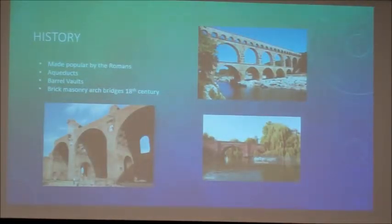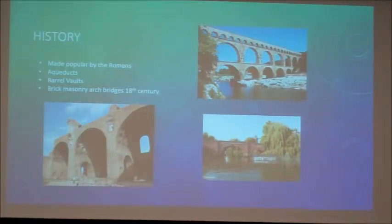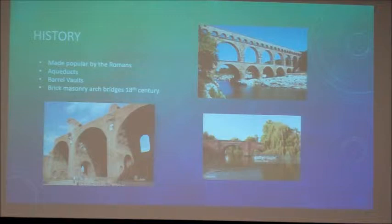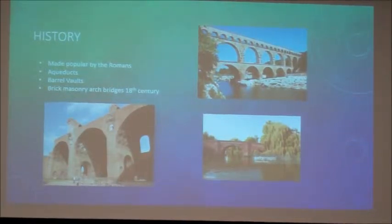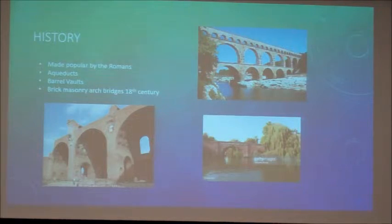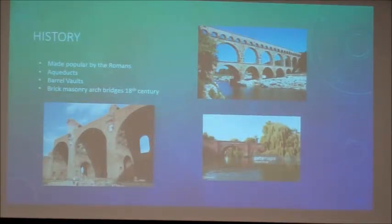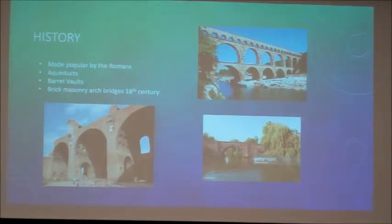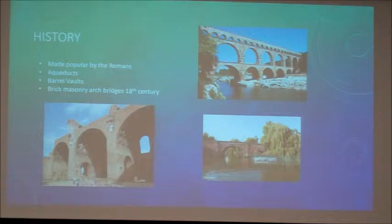Arches were made popular by the Romans, and they had aqueducts, barrel vaults, and also coliseums. The pictures on this side show aqueducts here. This is a barrel vault, which is based on the arch. And then here we have a brick masonry arched bridge from the 18th century.